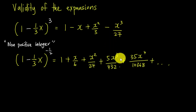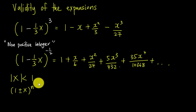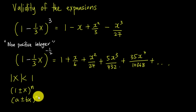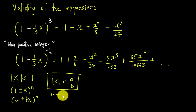How to find the validity of the expansion is quite simple. I used to always say x is less than 1, but this is less accurate. We get x less than 1 when we have something like (1 ± x)^n where n is a non-positive integer. More correctly, if you have (a ± bx)^n where n is a non-positive integer, then x should always be less than a over b — that is the correct condition for a valid expansion.